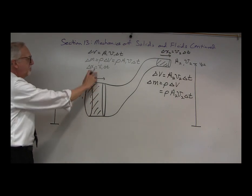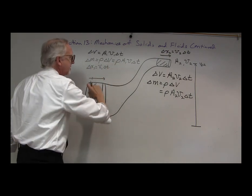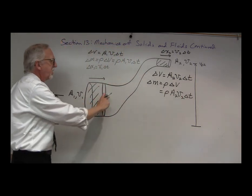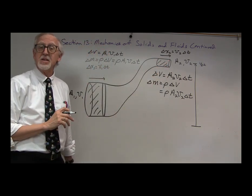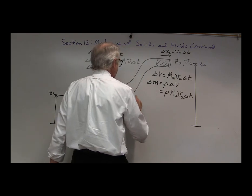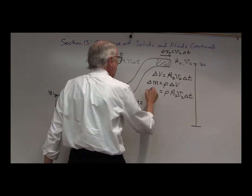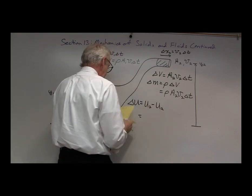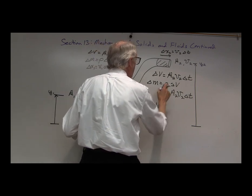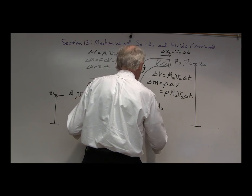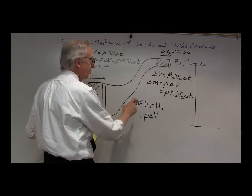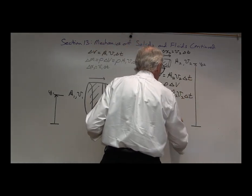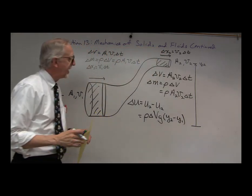So there's the mass going in, delta m equals rho a1 v1 delta t, and the mass coming out is rho a2 v2 delta t. If there is a change in height, we're going to have a change in potential energy. Delta u will be the final energy u2 minus u1, which is rho delta v — that's delta m — times g times the final height y2 minus y1. So that's the change in the potential energy.